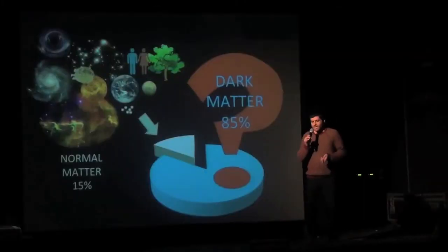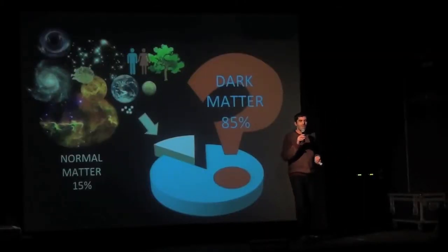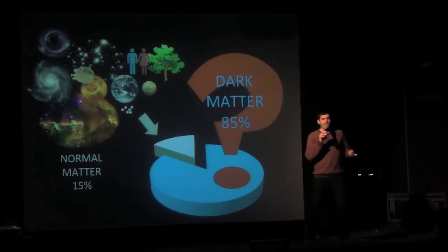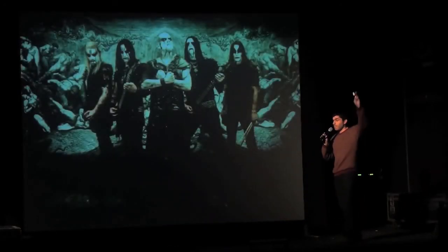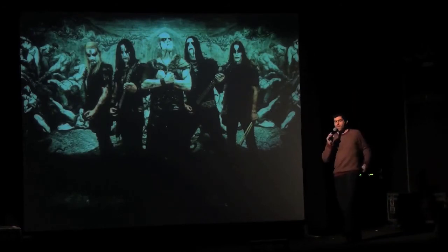So all these characteristics mean that dark matter cannot be made by any of the particles we know. It cannot be made of protons, neutrons, electrons, which form all the atoms that form everything. And it cannot even be made of none of the quarks we know. So what it can be? Maybe we can ask some of the experts on the dark side. And let's see what they say.